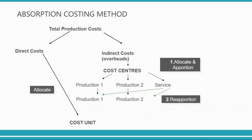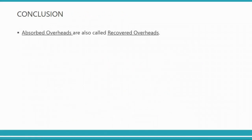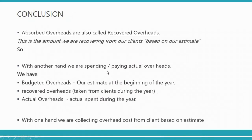Now let's move to a slightly more complex scenario. In the simple example we said five thousand dollars is the total overhead for one department with just machine hours — we assumed only one department. But in reality this five thousand belongs to two or three different departments, so you have to allocate and apportion it to different departments. Let me show you how that works.